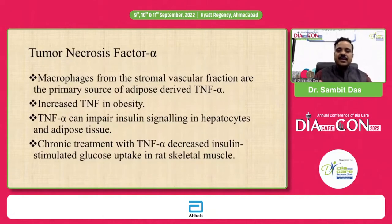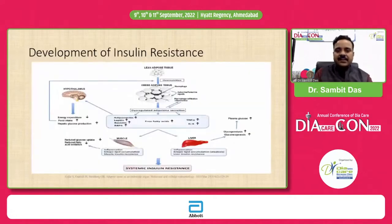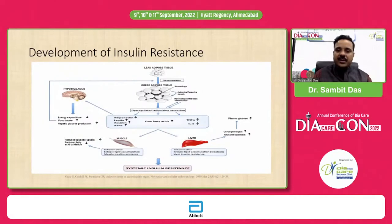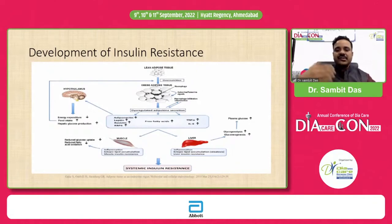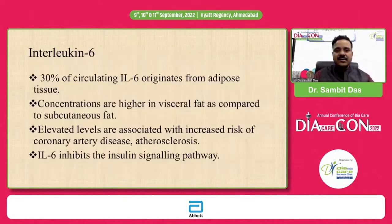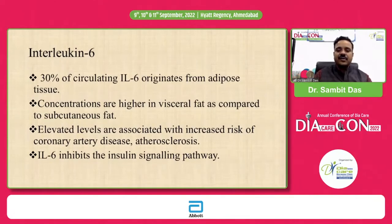TNF-alpha is not secreted directly from adipocytes but from macrophages within adipose tissue. It impairs insulin signaling in hepatocytes and adipose tissue, and chronic exposure decreases insulin-stimulated glucose uptake in skeletal muscle — this is how insulin resistance develops. In contrast to lean adipose tissue, obese adipose tissue is infiltrated with more inflammatory macrophages, which secrete more inflammatory markers and induce insulin resistance in both liver and muscle. Interleukin-6 is another inflammatory marker secreted from adipose tissue, with higher concentrations in visceral adipocytes, elevated levels associated with increased cardiovascular risk, and inhibition of insulin signaling.